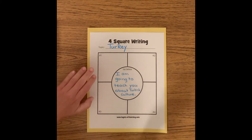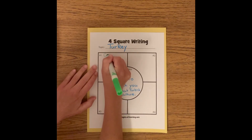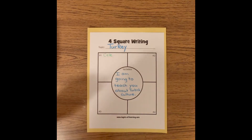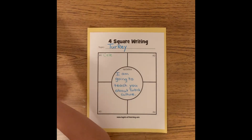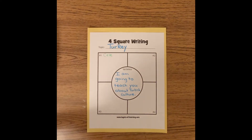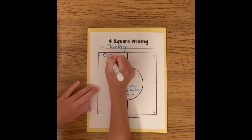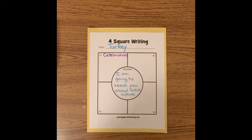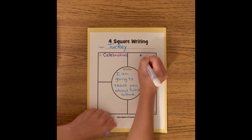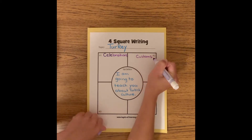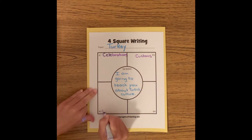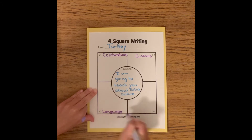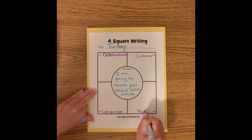I am now going to label my details because I don't want to forget what my sister told me about Turkey. I'm going to begin by writing my first detail, which is celebrations. My next detail heading is going to be customs, because I asked my sister about the customs that they have in Turkey. The third detail is language, because I asked her about the language they speak in Turkey. And finally, food.